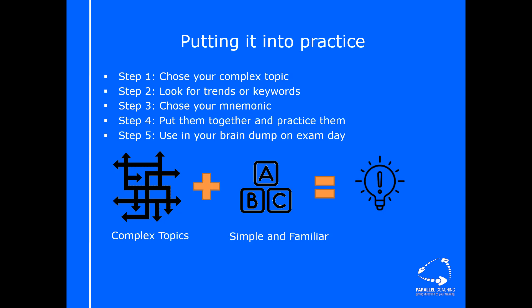Then all you need to do in step three is to choose your mnemonic. You might have alliteration, acronyms, and then how do you put those together is step four. So you start to put them together into something that makes sense for you, which could be your alliteration, your acronym, it could be your diagram, whatever it is that now simplifies and is in a fairly familiar format for you. Then you just need to practice them.